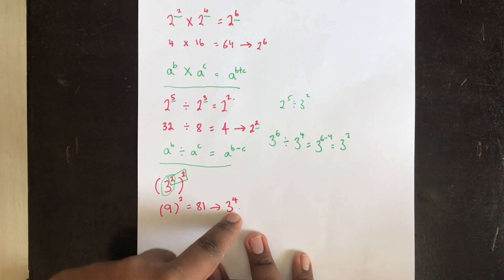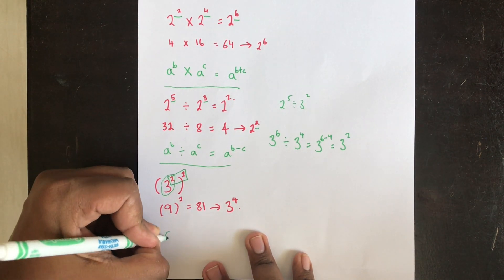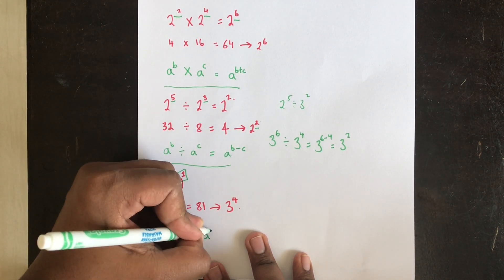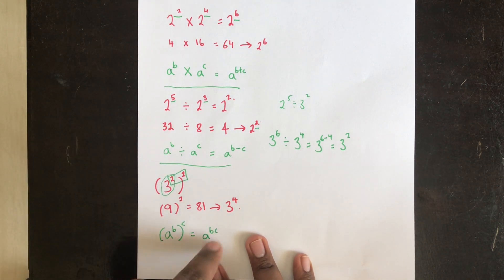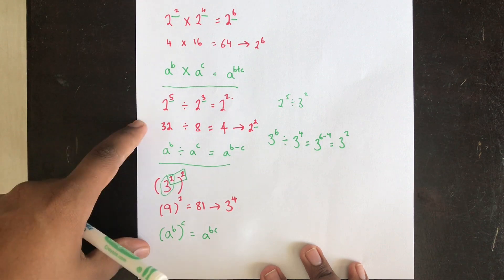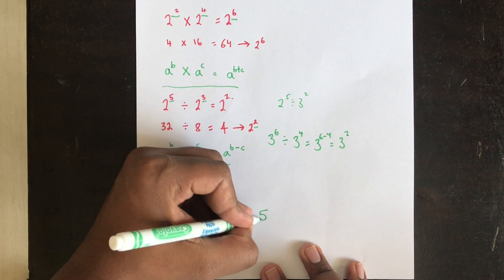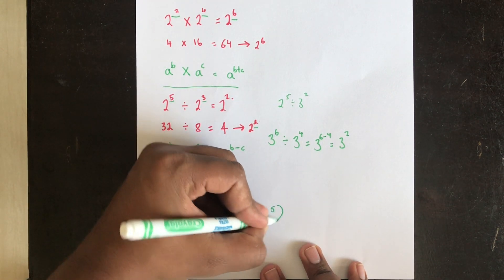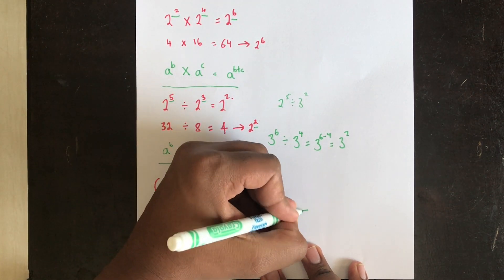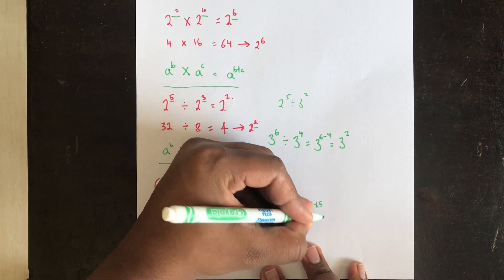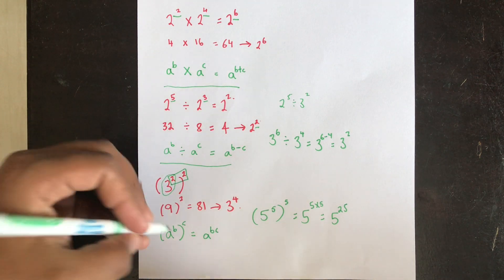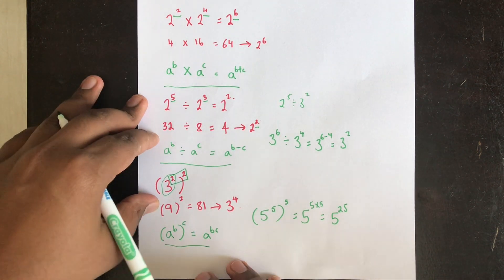That's another rule to remember: if you have a power b, the whole thing power c, your answer is a power b times c. For example, 5 to the power of 5, the whole thing to the power of 5, gives 5 to the power 5 times 5, which is 5 to the power 25.